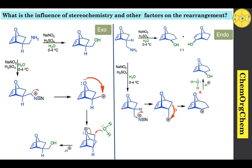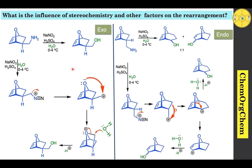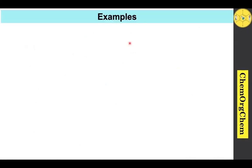In this endo case, one more pathway is also possible: if a bond migrates to the carbocation center, you get a stable allylic-type carbocation. This allylic carbocation, being quite stable, quickly reacts with a water molecule to give the corresponding rearranged alcohol. In this way, stereochemistry as well as other factors heavily influence the outcome of the Tiffeneau-Demjanov rearrangement products.